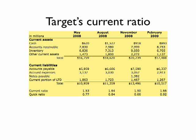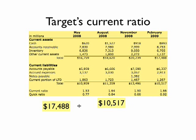Let's calculate the current ratio for Target for the quarter ending in February 2009. Start with total current assets of $17,488,000,000. Divide that by total current liabilities of $10,517,000,000 to get the current ratio of 1.66 times.